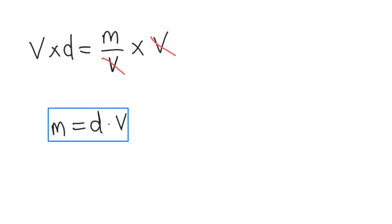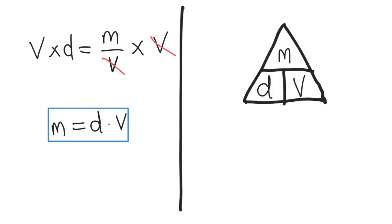There's another method too. I can use this triangle tool to help solve for the unknown. What you do with this tool is that you cover up the variable that you want to solve for, in this case the m. And then the tool will tell you how to find it.